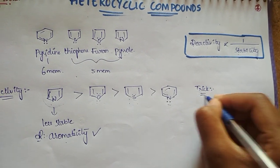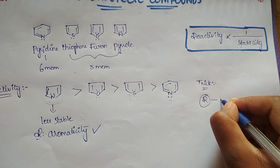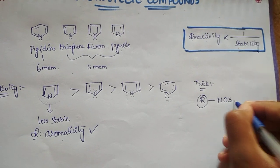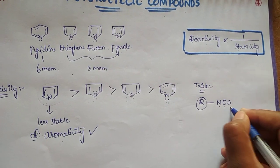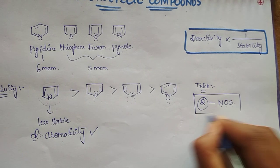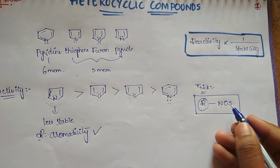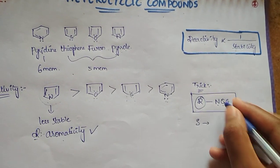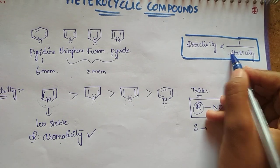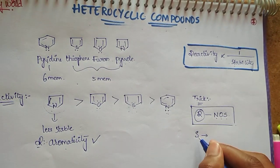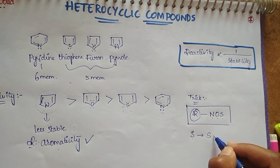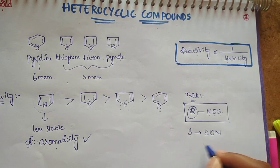We have a trick for reactivity order: pyrrole, furan, thiophene. For stability, it becomes the reverse of reactivity, right? So the stability order is S-O-N: thiophene, furan, pyrrole. This is a trick for you.